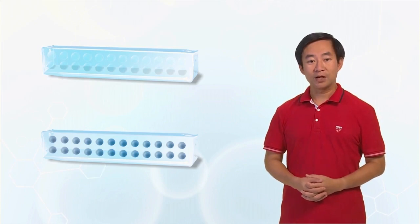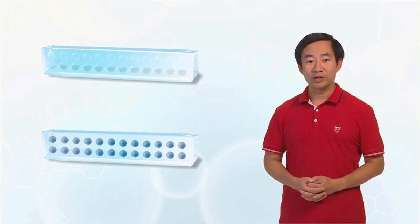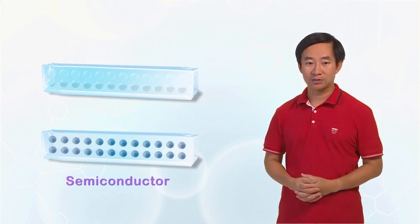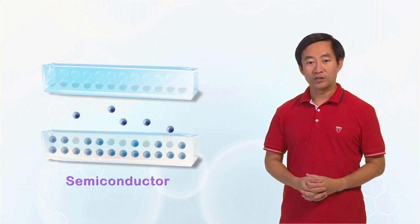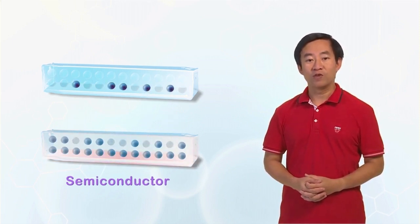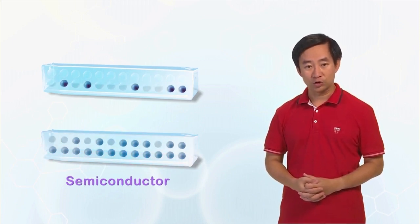Semiconductors have similar band diagrams to those of insulators, except that semiconductors usually have smaller band gaps. As a result, energy supplied at room temperature is sufficient to excite a considerable amount of electrons from the valence band to the conduction band of a semiconductor that allows some electrical conduction.